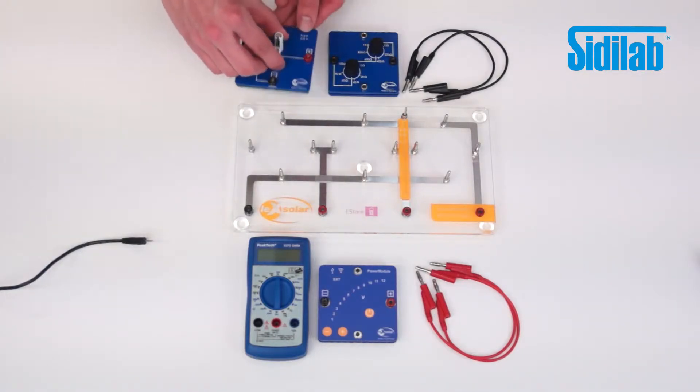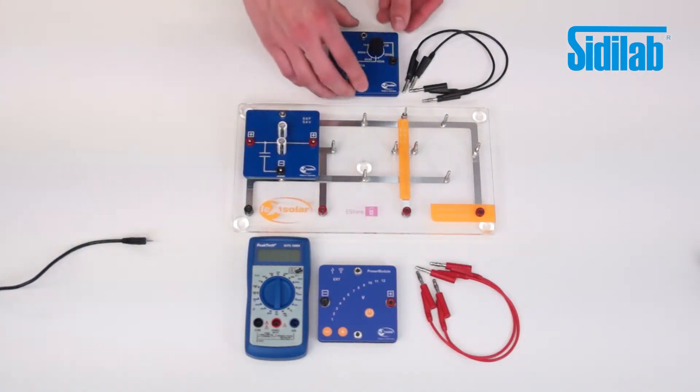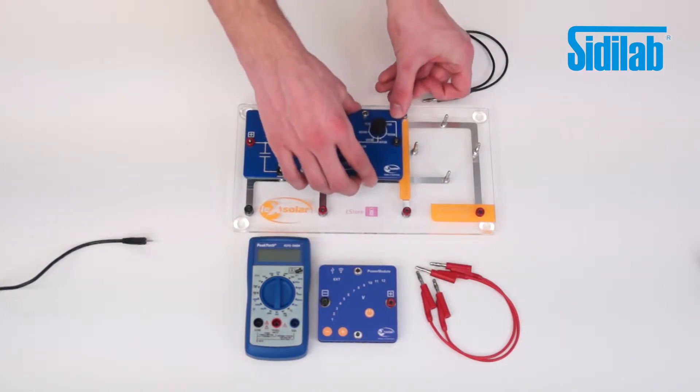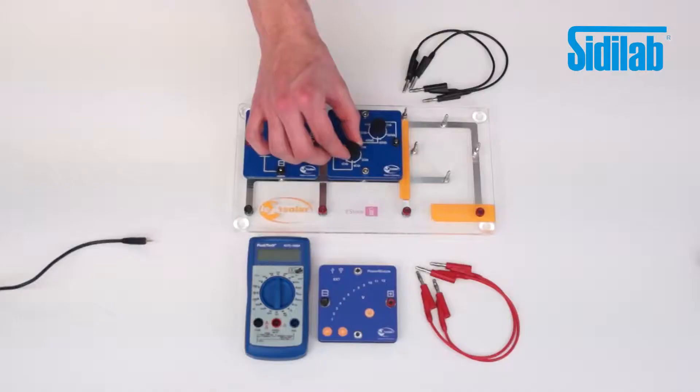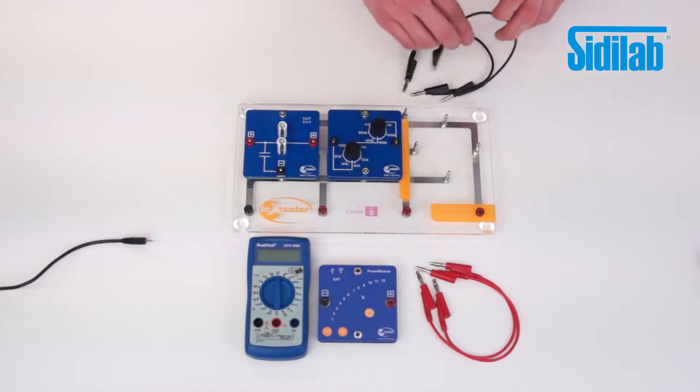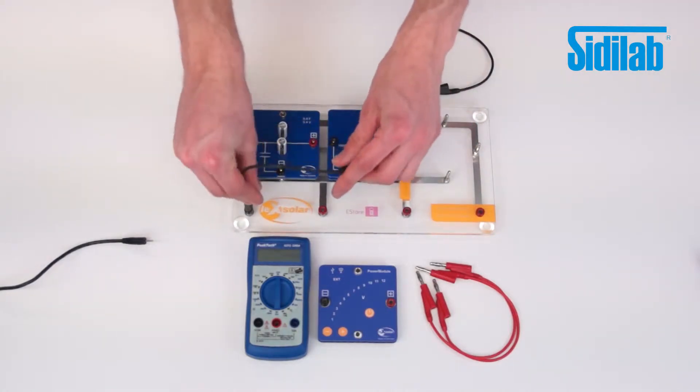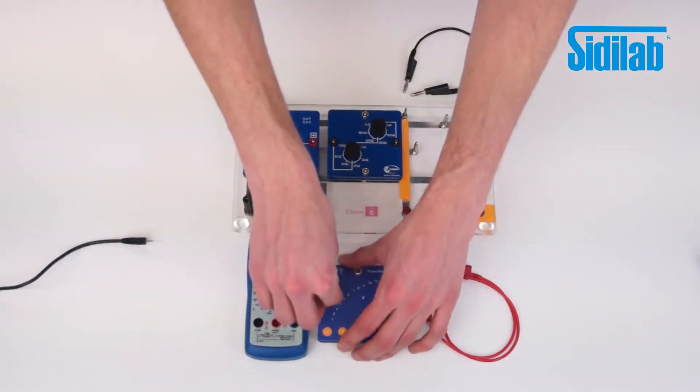The capacitor and the potentiometer are inserted into the left and middle slot of the base unit. On the potentiometer we set a resistance of 20 ohms. Thereafter the circuit is closed by the power module and the power supply is ensured.